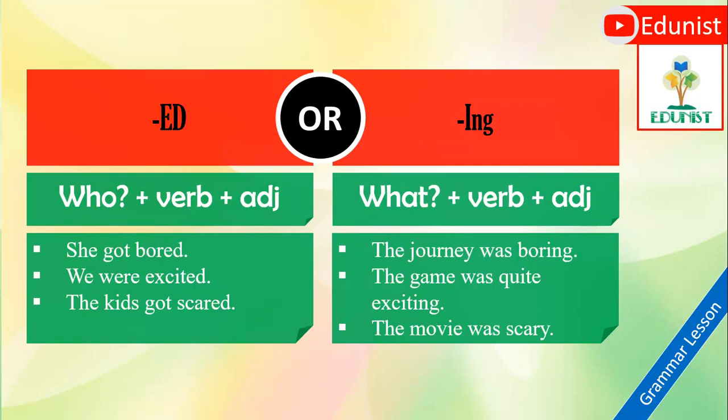Here 'scary' is the adjective for 'scared,' not 'scaring' — so there can be some exceptions in language. To summarize: when talking about a person, use the -ed form — 'she got bored,' 'we were excited,' 'the kids got scared.' When talking about things, activities, or situations — a journey, game, or movie — use the -ing form: 'boring,' 'exciting.' But some exceptions exist, like 'scary.'